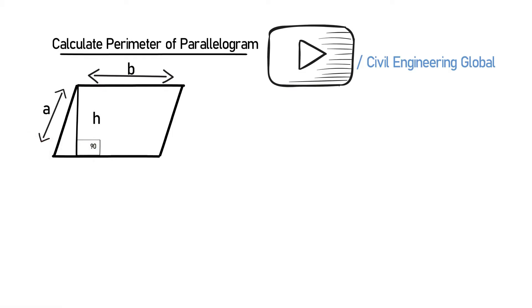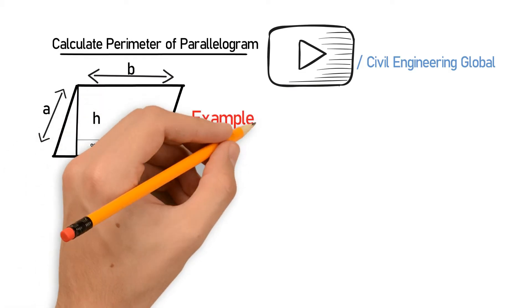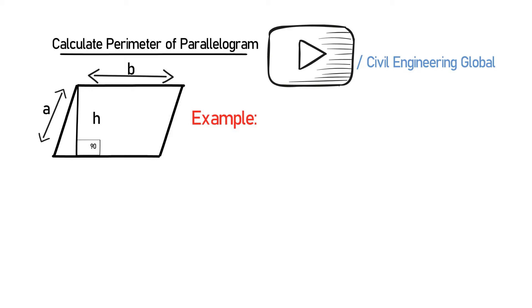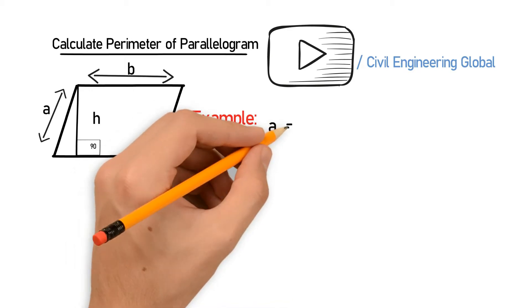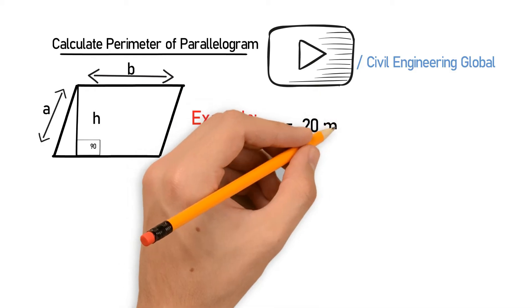So let's take an example. In this example we have the data: a is equal to 20 meter, b is equal to 70 meter.